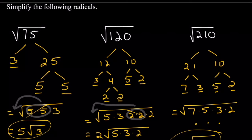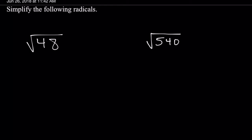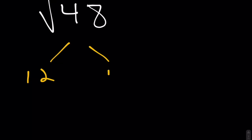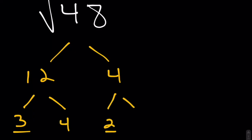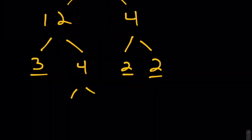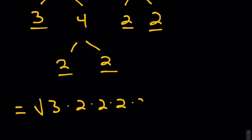Let's take a look at what happens when we have some radicals that produce multiple doubles. We'll start with the square root of 48. 48 breaks down into 12 times 4. 12 can be broken down further into 3 times 4 — 3 being prime. 4 breaks down into 2 times 2, both prime. And we're going to have the same situation here with another 2 times 2 — both prime. We are done with our factor tree. Rewriting, we will get the square root of 3 times 2 times 2 times 2 times 2.